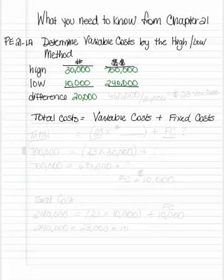$700,000 minus $240,000 is $460,000. You're going to divide the difference in cost by the difference in units to come up with $23, which is your variable cost per unit.